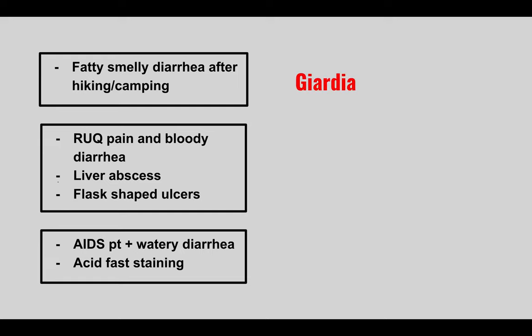This is Giardia — they'll mention somebody that was outdoors who now develops foul-smelling fatty stools. The next patient is going to come in with right upper quadrant pain, bloody diarrhea, liver abscess, and flask-shaped ulcers.